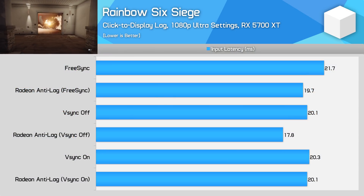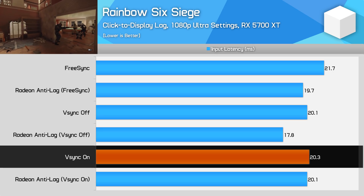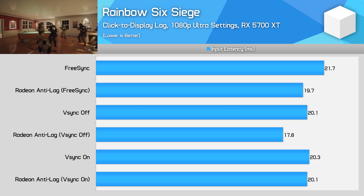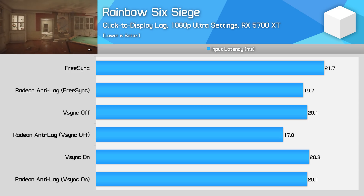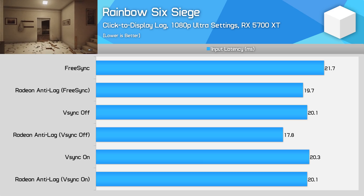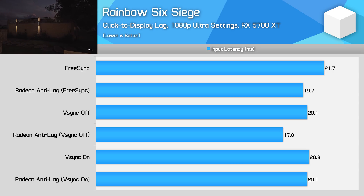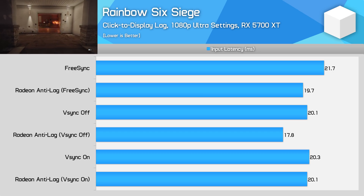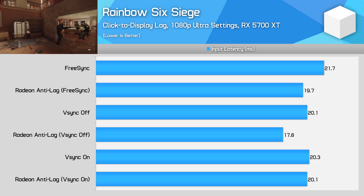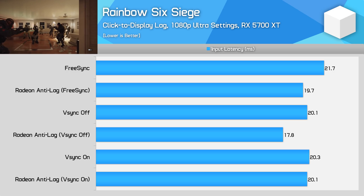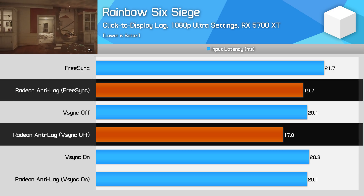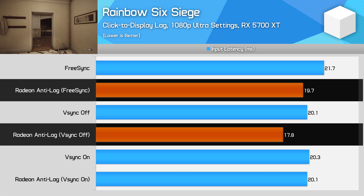Let's start the testing with Rainbow Six Siege. I've tested three different modes: VSync on, VSync off, and FreeSync on, with both Radeon Anti-Lag enabled and disabled. This is a game that generally has very low input latency — I was pushing above 200 FPS in my testing, and high frame rates have a significant impact in reducing input latency. Across the board we're in that 17 to 22 milliseconds of input latency zone, which is lightning quick. Radeon Anti-Lag did produce consistently faster results for two of the three test conditions. For VSync off we shaved off 2.3 milliseconds, and for FreeSync we shaved off about 2 milliseconds. There's no difference for VSync on gaming, not that we'd recommend using VSync for any input lag sensitive games.